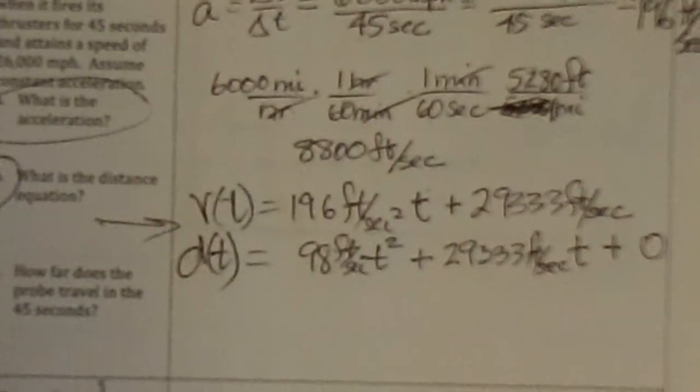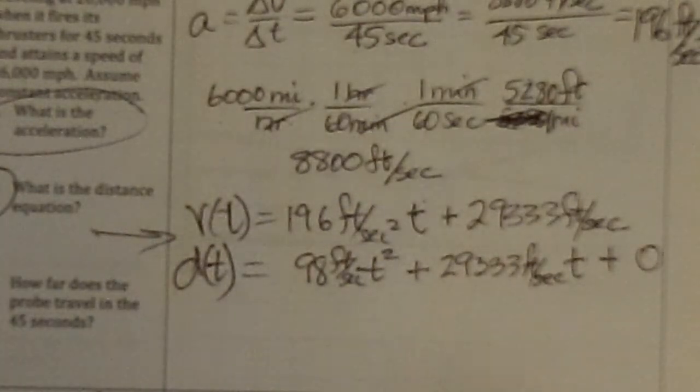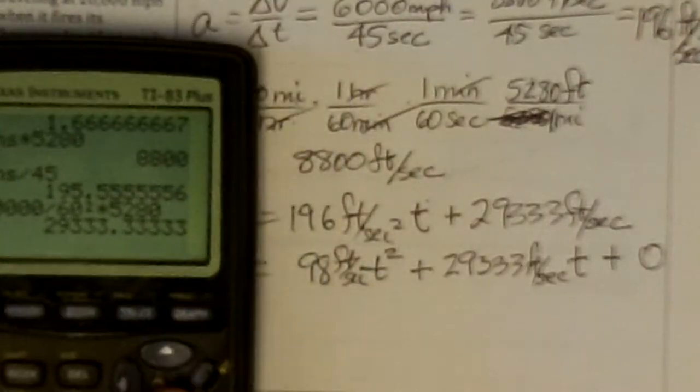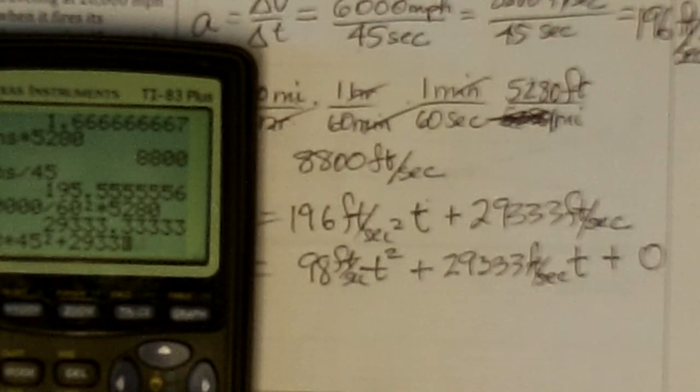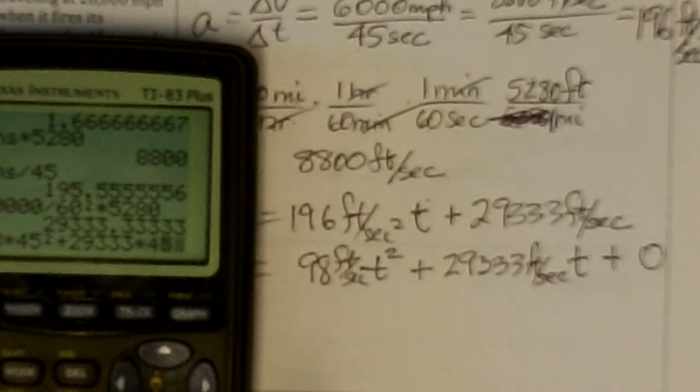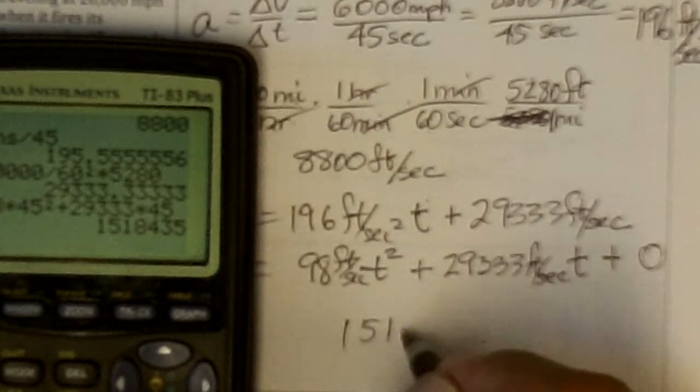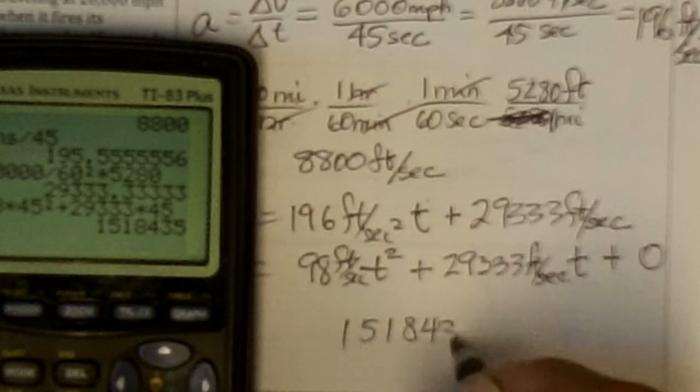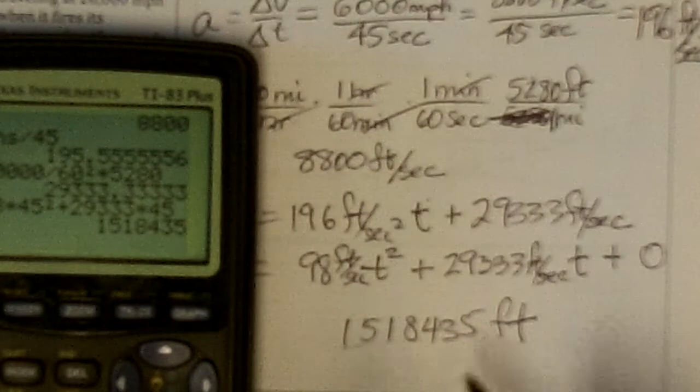And how far does the probe travel in 45 seconds? So I would put 45 in there. So I have 98 times 45 squared, plus 29333 times 45. And I get 1518435 feet.